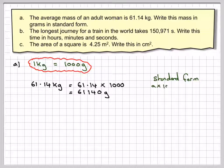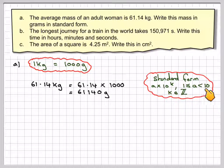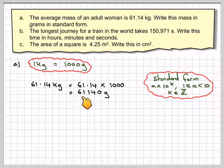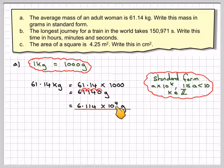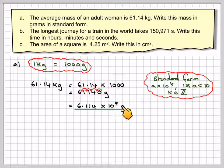We're asked to write that in standard form. Standard form is a times 10 to the k, where a is a number between 1 and 10 but not equal to 10, and k is an integer. So to make this a number between 1 and 10, this needs to become 6.114. In doing that, I've moved the decimal place 1, 2, 3, 4 places. So it's going to be times 10 to the power of 4 in standard form. The correct answer is 6.114 times 10 to the 4 grams.